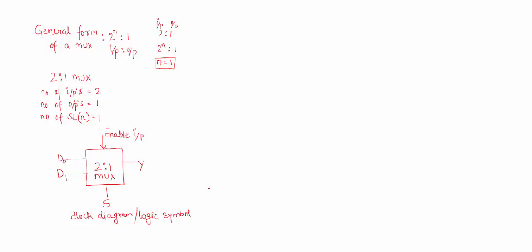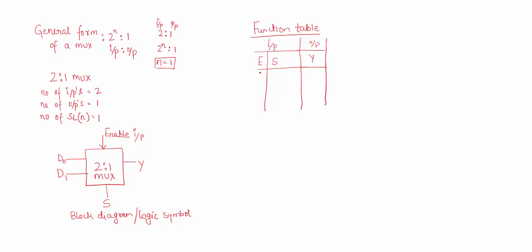The difference between a truth table and a function table is that in the function table the outputs are given in terms of inputs, whereas in a truth table the output is given as either true or false. The function table of the 2-to-1 MUX will have 2 input columns: the first is enable, the second is select. It will have 1 output y. When enable is 0, irrespective of the select line, the output is always 0 — that is, the MUX is disabled.